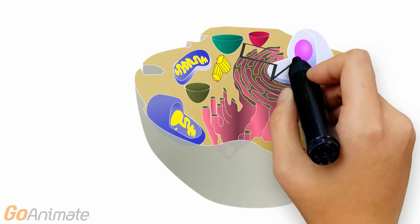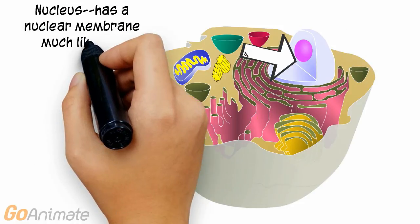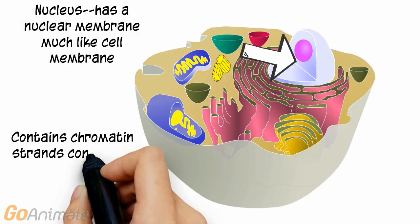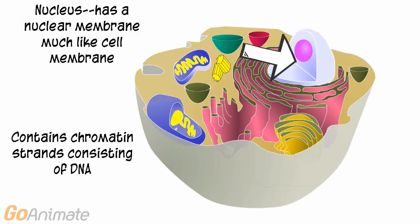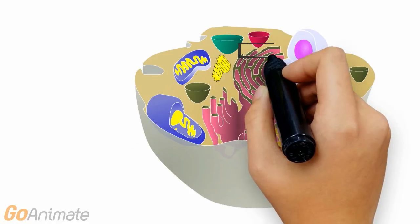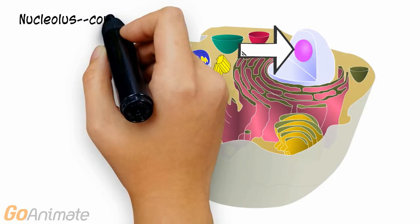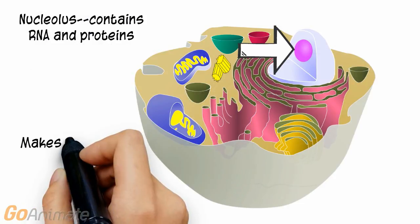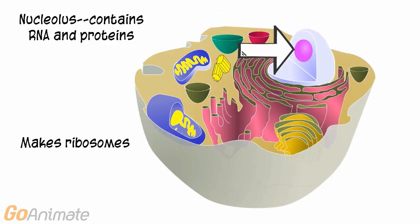The nucleus contains chromatin strands of DNA. It has a membrane much like the cell membrane. The nucleolus contains RNA and proteins. Ribosomes are made in the nucleolus.